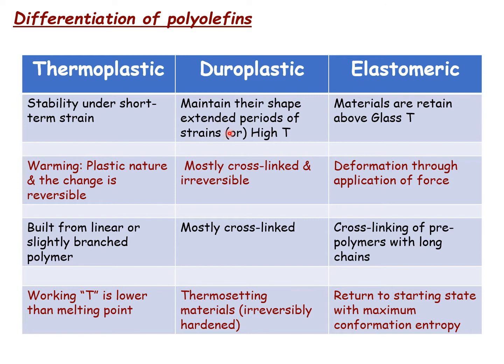Duroplastics maintain their structure under extended periods of strain — you can apply mechanical strain for a while — and they can sustain high temperatures. They are mostly derived from cross-linked polymers. When you apply high temperature and high strain, irreversible changes occur, which is why they are called thermosetting materials. Beyond a certain temperature, irreversible hardening occurs, so duroplastics are essentially thermosetting materials.